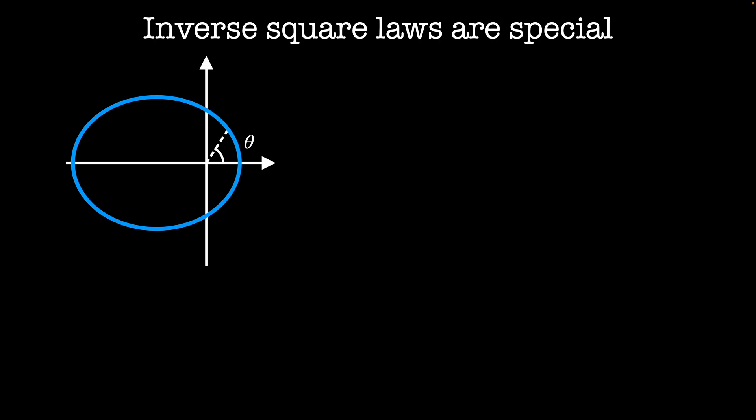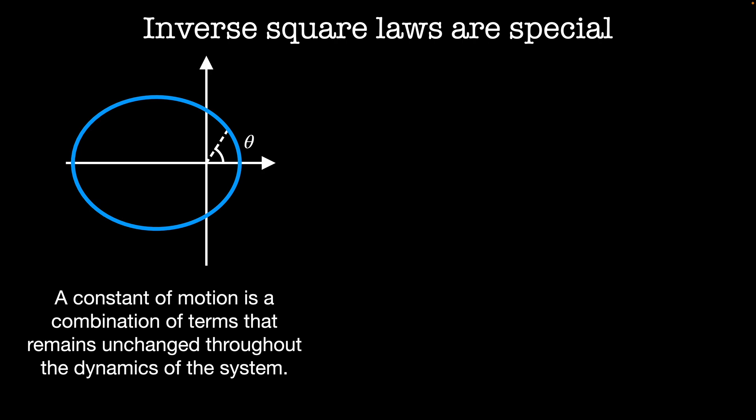But what is a constant of motion? A constant of motion is a combination of terms that remains unchanged throughout the dynamics of the system. Previously, we used Noether's theorem to look at the symmetries of the Lagrangian as a way to derive conserved quantities. Here we're going to take a more Hamiltonian approach and look at some constants within the phase space of our system. To derive this particular constant of motion, we'll basically be doing algebra to solve for a first integral of the system.